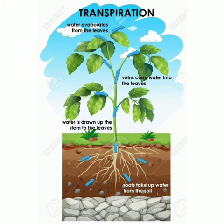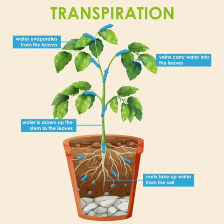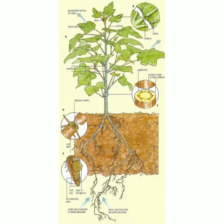Any greens which mummy bought from the market for preparing sambar or sabji will do. You have to do this activity on a sunny day when the climate is a little hot. Take a leaf bunch, put it inside the polythene cover, and tightly tie the mouth of the cover. After a few hours, observe — you will see water droplets coming out of the leaf or the plant. This shows that transpiration has taken place.